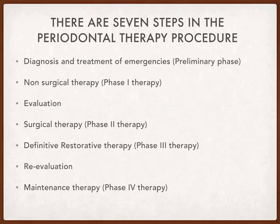To treat any periodontal disease, we have seven steps that we should do, partly or completely. The first step is the diagnosis and treatment of emergencies, also known as the preliminary phase. Then we do the non-surgical therapy, followed by an evaluation. Then, if needed, we do the surgical therapy and definitive restorative therapy, then a re-evaluation, and finally the maintenance therapy, also known as phase four therapy.